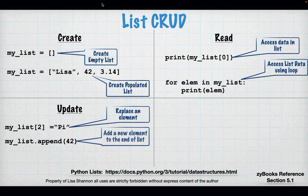You can also append to a list. If you want to add more stuff, use the '.append' function. Because Python already knows it's a list, you just use the variable name 'my_list', call the append function, give it a value, and it will change the list.